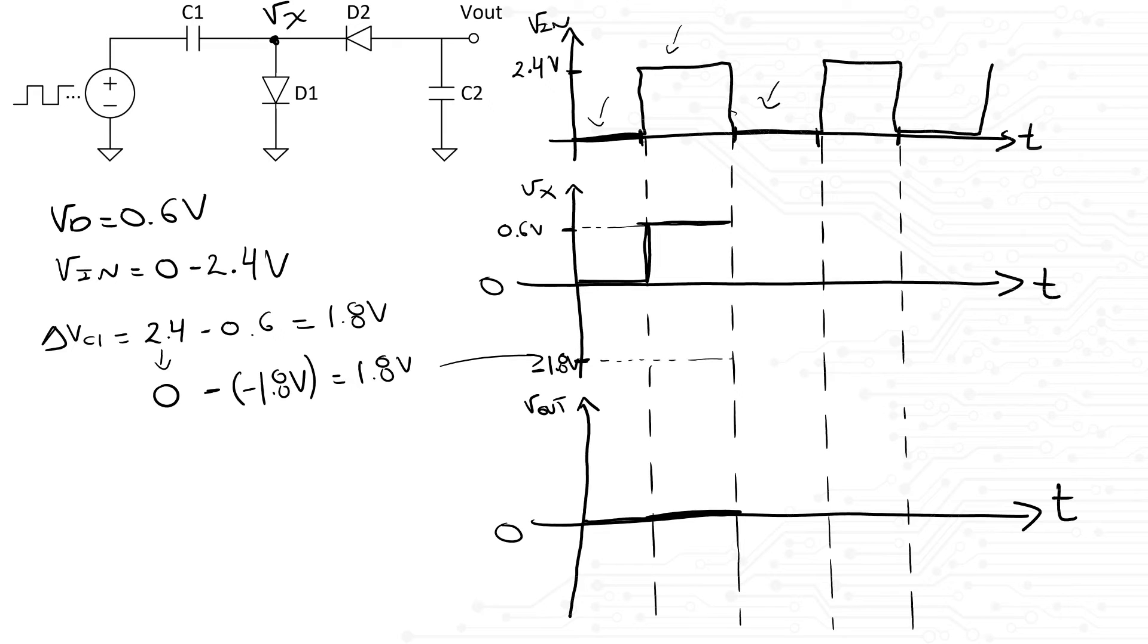What happens at Vout though? At this moment, D2 is no longer reverse biased. There is current flowing through D2 charging C2. Vout will start at 0 and drop to negative voltages, while Vx starts at negative voltages and will start climbing up due to the current flowing through D2. This will stop until the voltage across D2 is 0.6 volts.